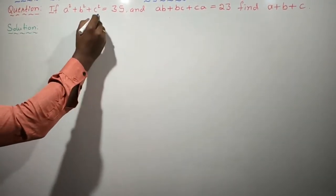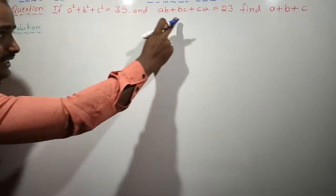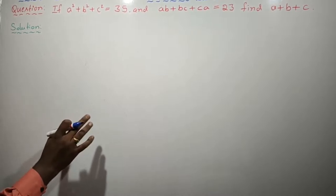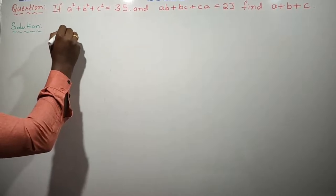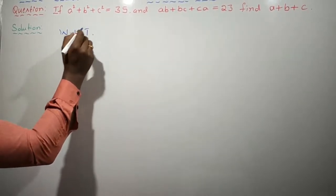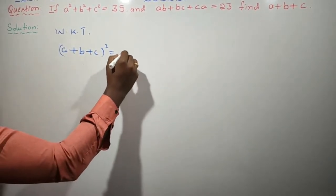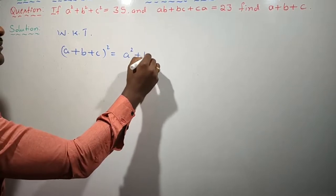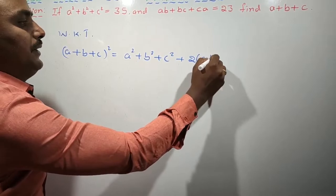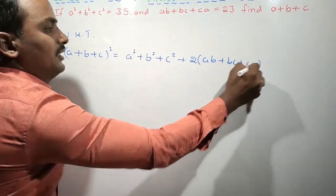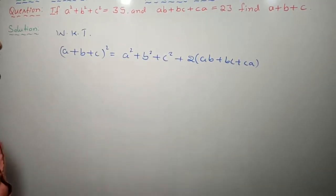Look here. This is given data — a squared plus b squared plus c squared equals 35, and ab plus bc plus ca equals 23. We are going to find that value. We know this identity, children. I will write it down in the solution part first: a plus b plus c, whole squared, is equal to a squared plus b squared plus c squared plus 2 of ab plus bc plus ca. This identity you already learned from 7th and 8th standard.